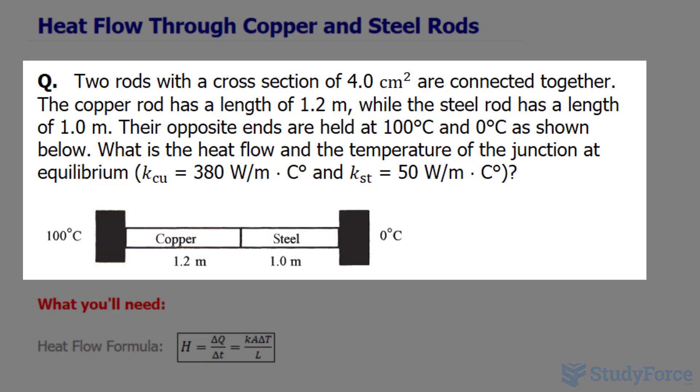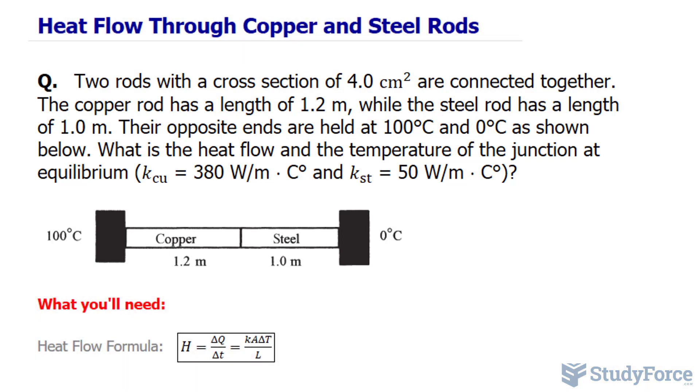What is the heat flow and the temperature of the junction at equilibrium? We've been given the thermal conductivity for copper, that's a constant K of 380 watts per meter times degrees Celsius, and for steel, being 50 watts per meter times degrees Celsius.